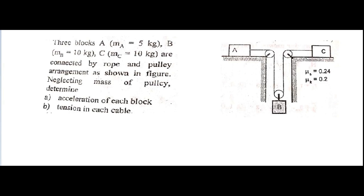Today we have another video in applied mechanics. In this video we will solve a tutorial problem of dynamics. Our problem: three blocks A having mass 5 kg, block B having mass 10 kg, and block C having mass 10 kg are connected by a rope and pulley arrangement as shown in the figure. Given neglecting the mass of the pulley, determine the acceleration of each block and the tension in the cable.